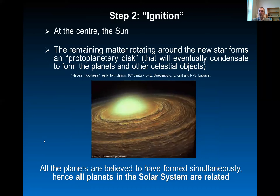So we believe that all the planets and all the objects form more or less simultaneously. That means that all the planets of the solar system are related.